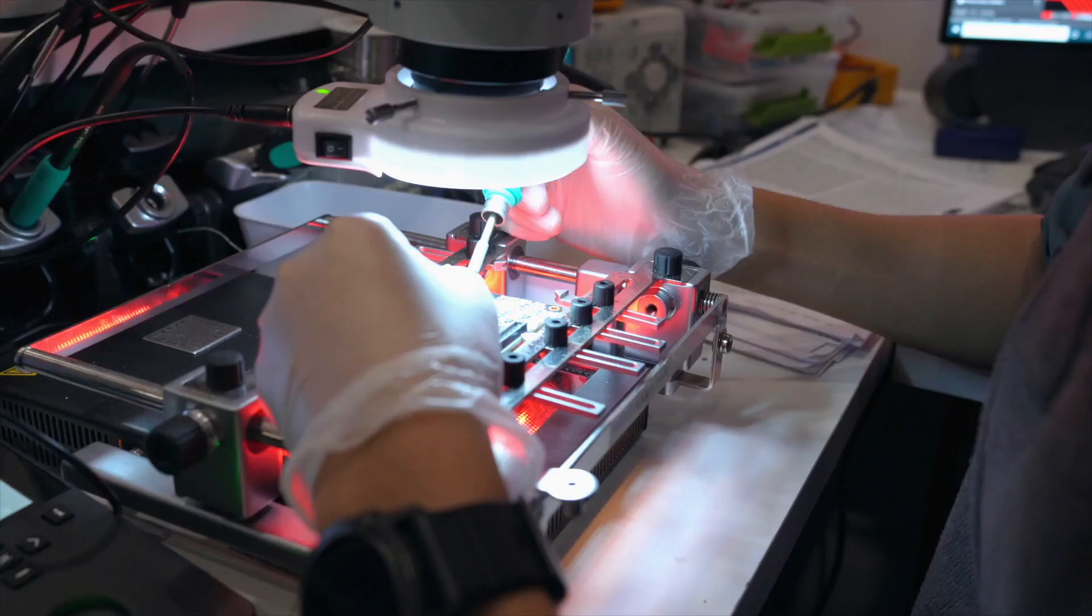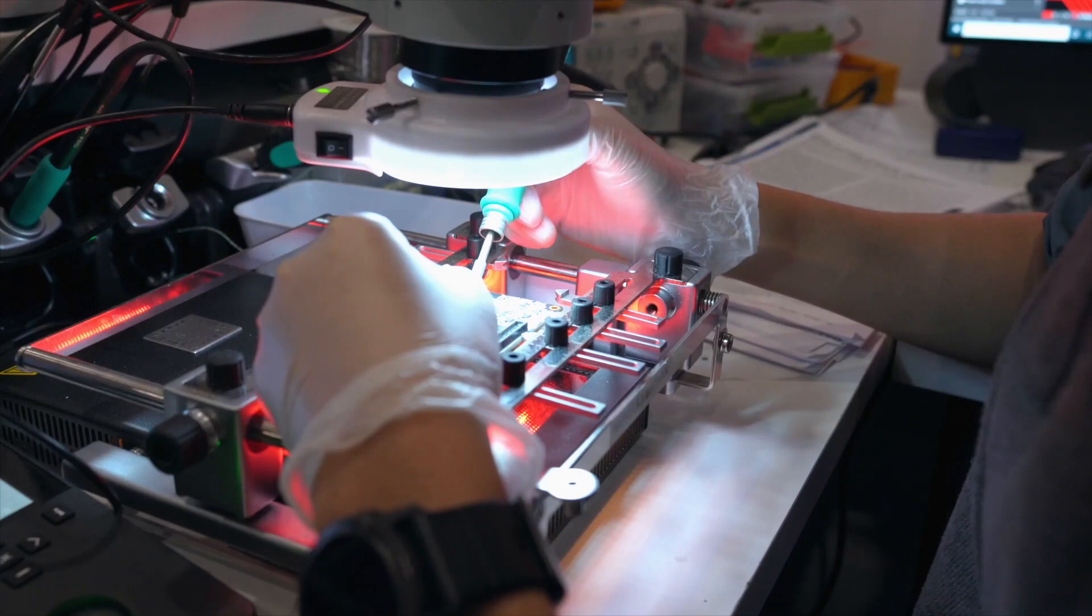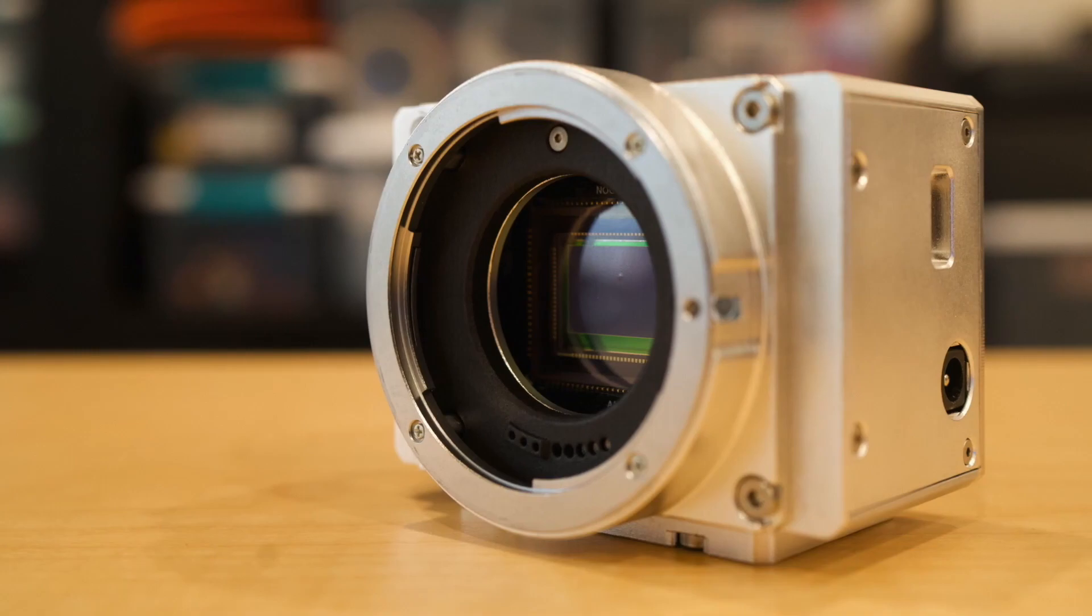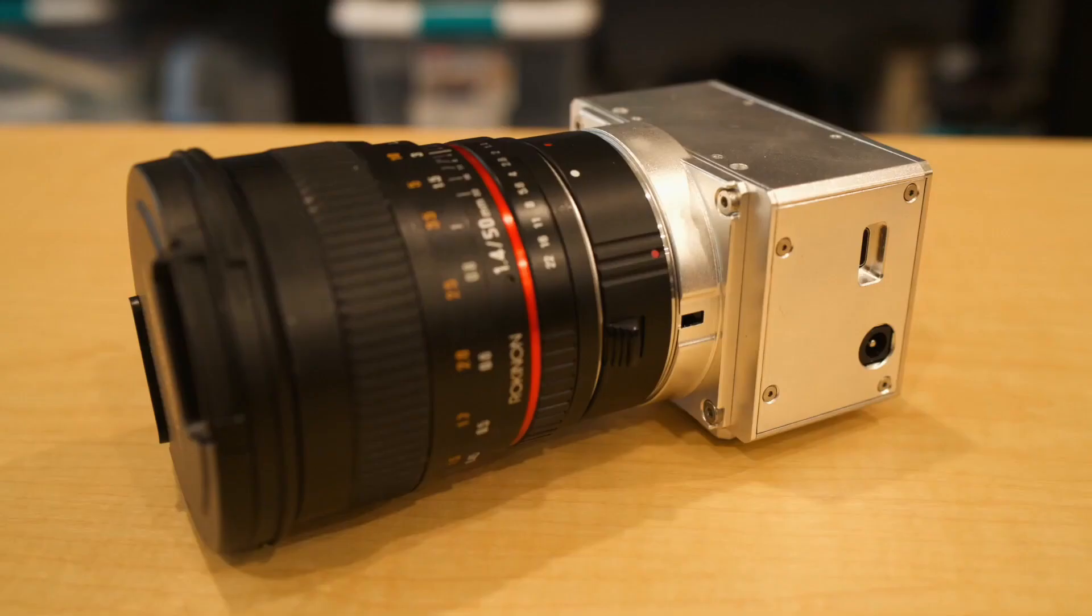So, we integrated image sensors that mimic the mantis shrimp's compound eye, and optical filters that can separate the visible from the invisible, and we built a camera sensitive to six colors of light spanning the visible and near-infrared.